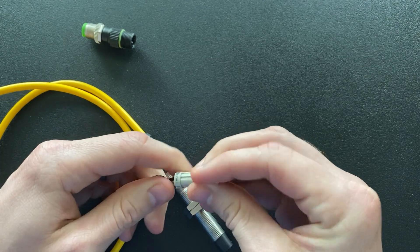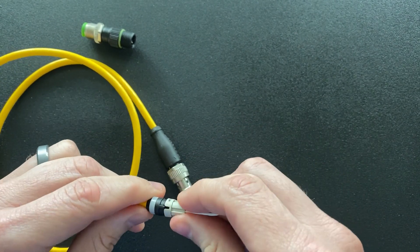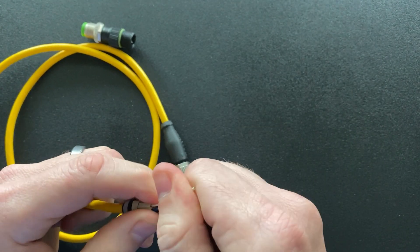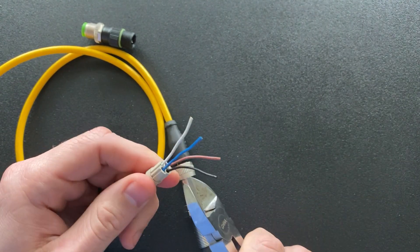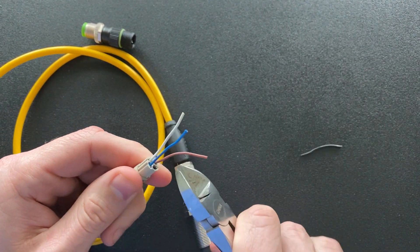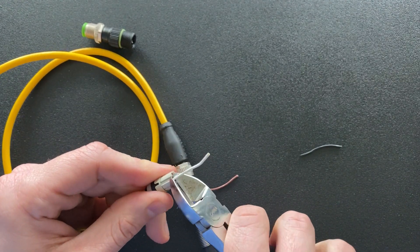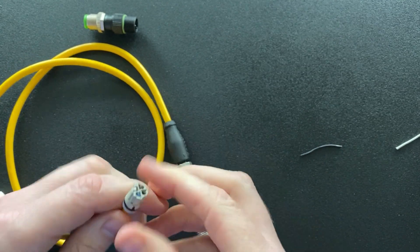Once those are all through, you just slide this carrier all the way down to the strain relief. It fits in nicely there—it's keyed. Then all you have to do is trim these conductors flush.